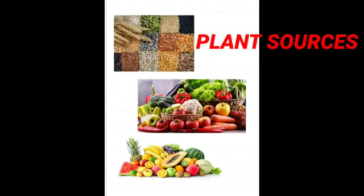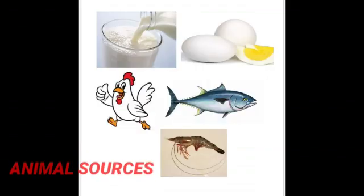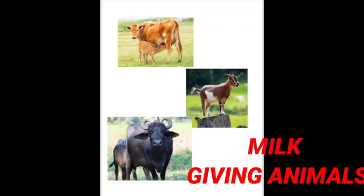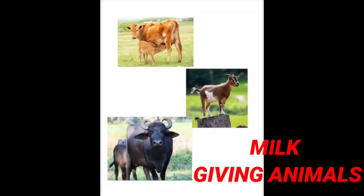Now let's look at animal sources: milk, egg, chicken, fish, prawns — all these are animal sources. From which animals do we get milk? Cow, goat, buffaloes, and so on.